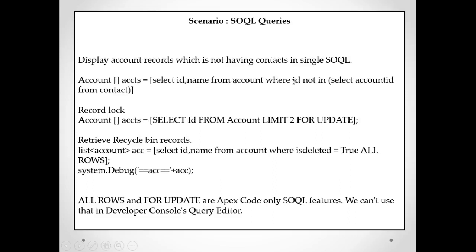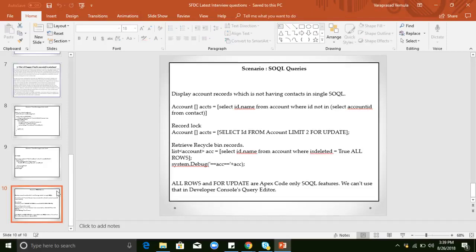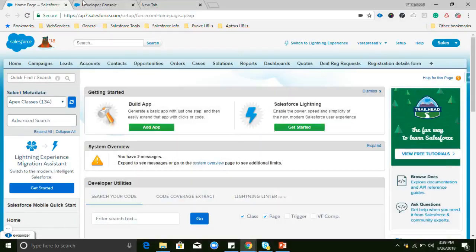We can write: SELECT Name FROM Account WHERE Id NOT IN (SELECT AccountId FROM Contact). This means the Account ID is not existing in any contact, so here we can directly get accounts not having contacts. For example, I will open my Salesforce org and show you how we can create and test this data.